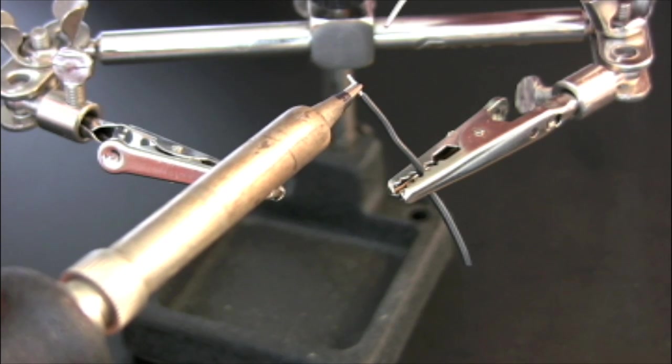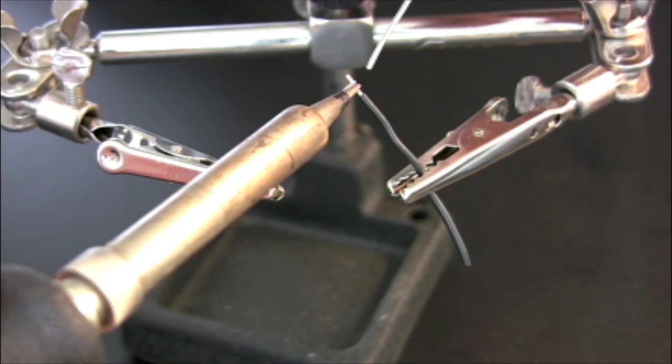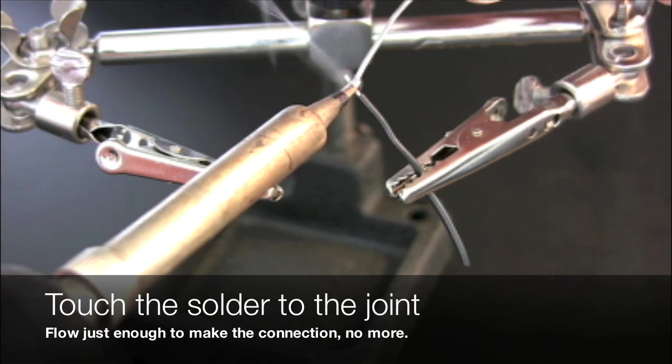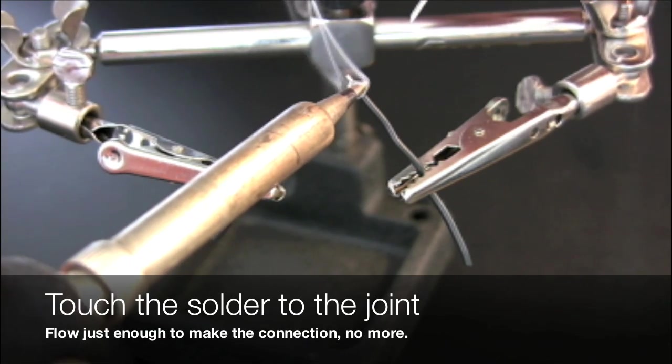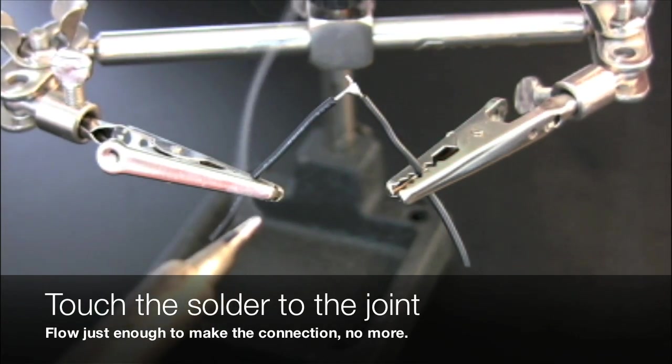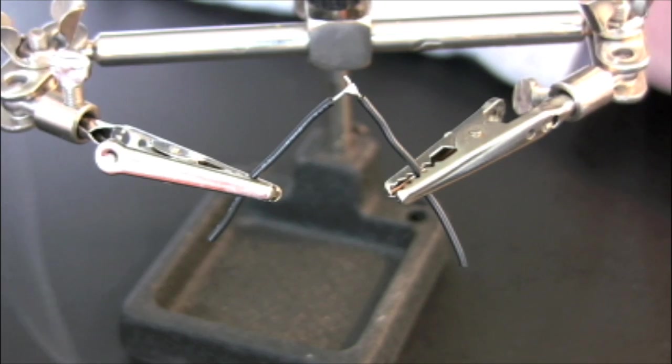See how I heat the wires, I bring the solder in, and then I remove both the iron and the solder together. Done correctly, this produces a strong, waterproof bond between the two bases and the solder.